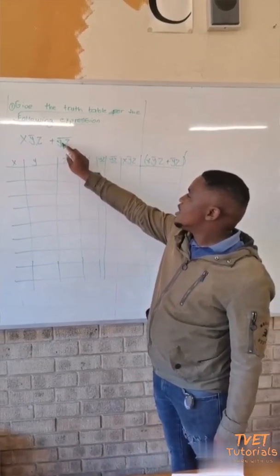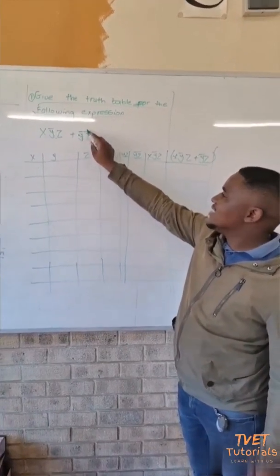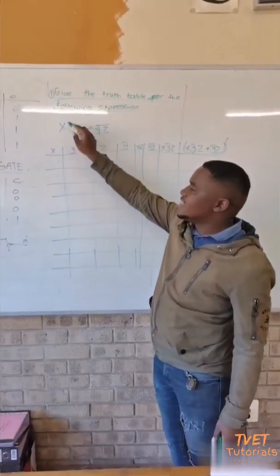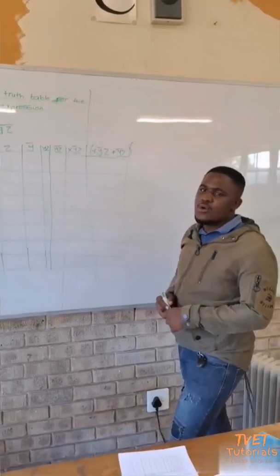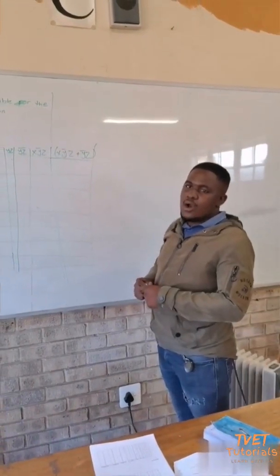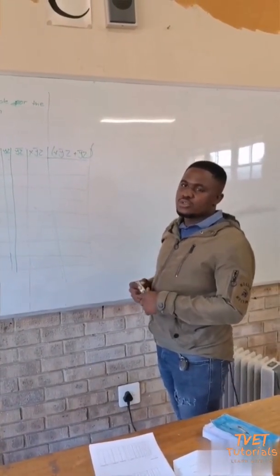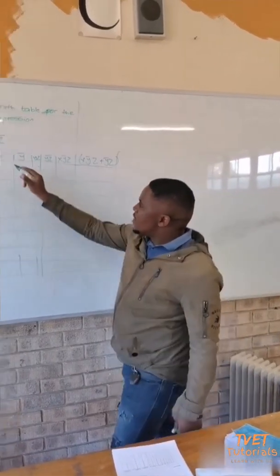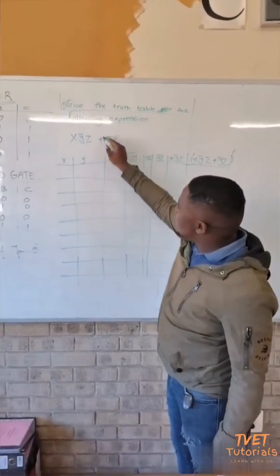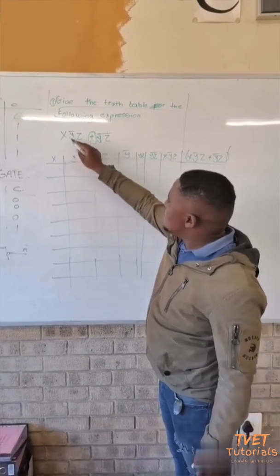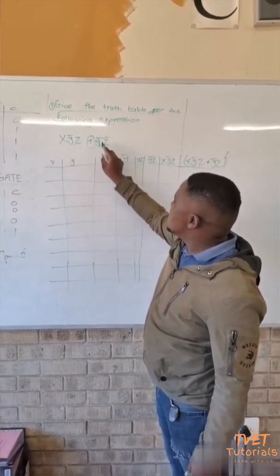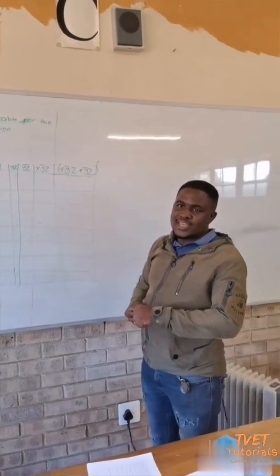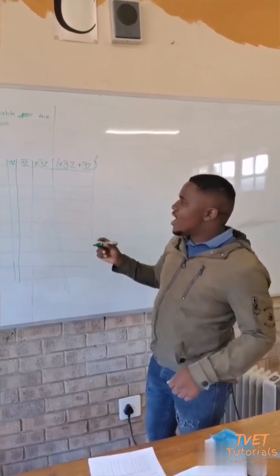When we check this, Y and Z have an inverter, and this Y also has an inverter. So we need to know how to solve this expression. We are having a plus sign and multiplications, so we must know the type of gate we are dealing with.